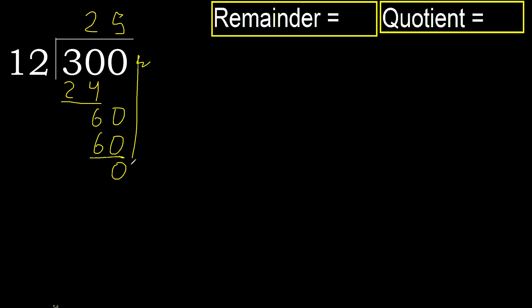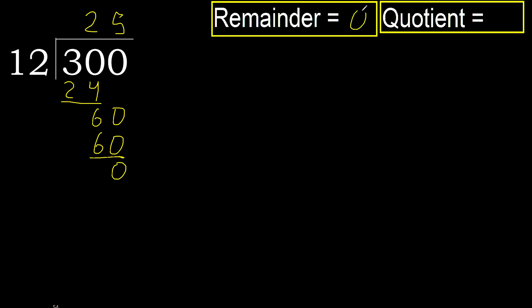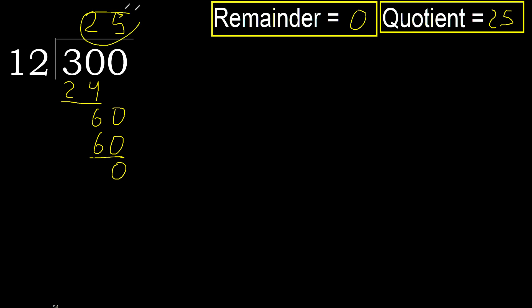Next, there is no more number, therefore finish it. Therefore, 300 divided by 12 is 25.